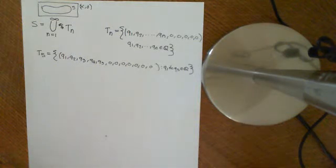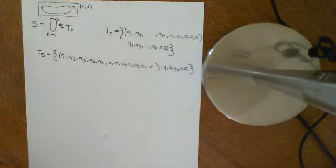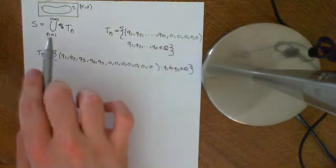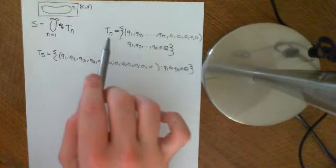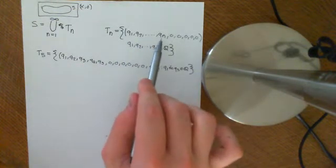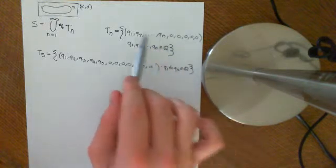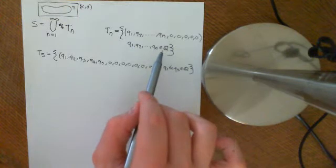Welcome back to this next video. In the previous video, I started off with a discussion about the Lp spaces to remind you. Then I defined the set S, which is going to be the countable union of these Tn's. The Tn's are defined as sequences of rational numbers up to the nth term, and after that it's just zeros, but the first n terms can take on any values within the rational numbers.